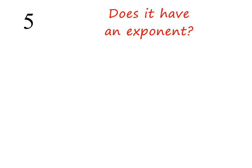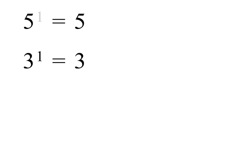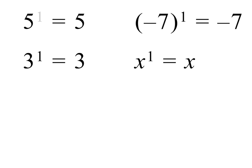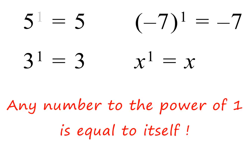Here is the whole number 5 — is it a power? In other words, does it have an exponent? Yes, all whole numbers have an invisible exponent of 1. This means that 5 to the power of 1 is equal to 5, and that 3 to the power of 1 will be equal to 3, and that minus 7 all to the power of 1 will be equal to minus 7. In fact, x to the power of 1, where x is any number, will be equal to x. Any number to the power of 1 will be equal to itself.